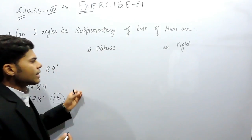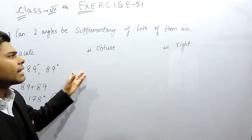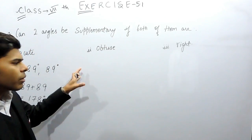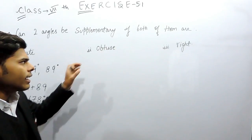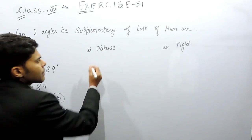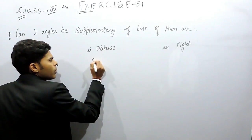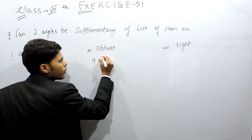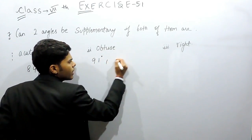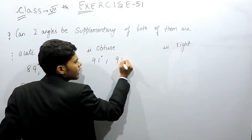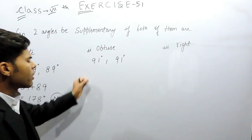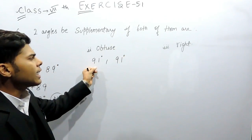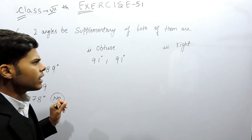Now for obtuse angles. We take an obtuse angle just greater than 90 degrees — 91 degrees. We use 91 degrees for both angles because it is just greater than 90, which is the minimum obtuse angle.